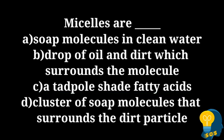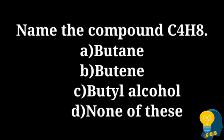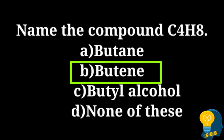The next question is: name the compound C4H8. The options are butane, butene, butyl alcohol, none of these. To find out what it is, you should know the molecular formula of saturated and unsaturated hydrocarbons. C4H8 satisfies the alkene formula CnH2n. The number of carbon atoms is four, so the prefix is 'but', and as it belongs to alkene, the correct answer is butene.